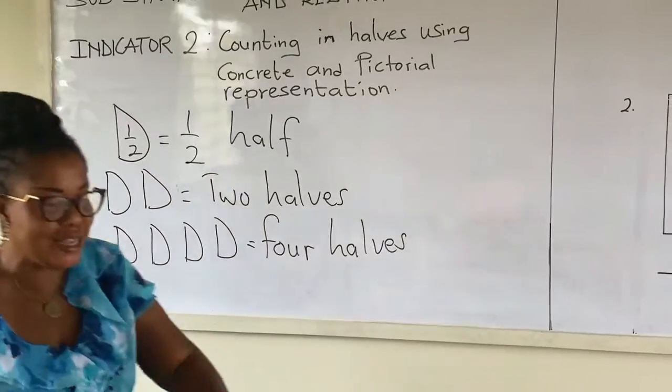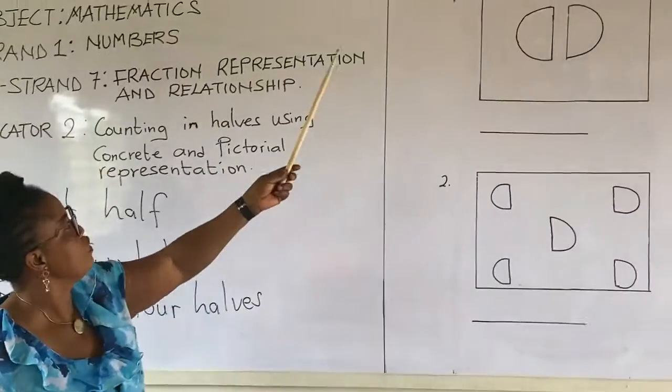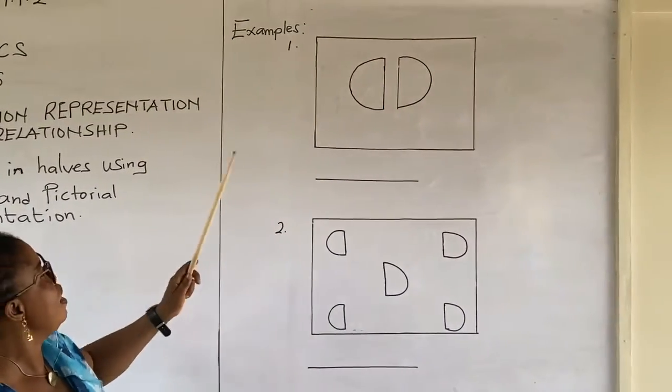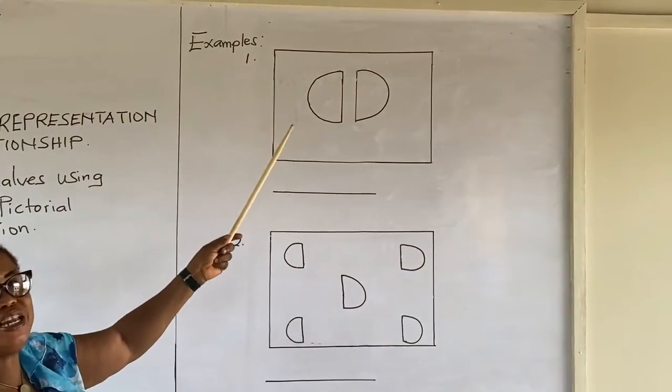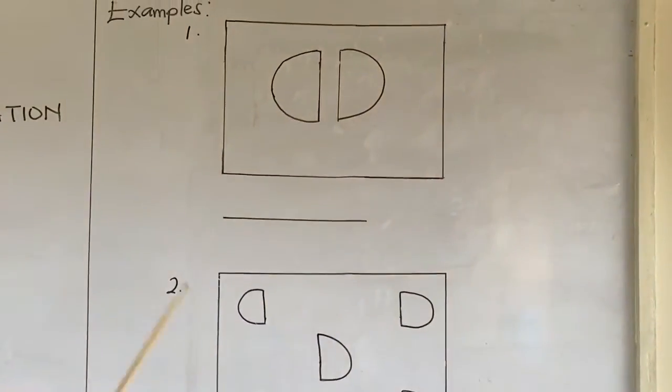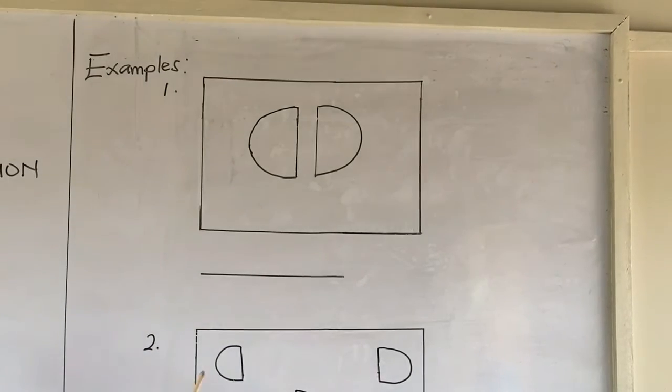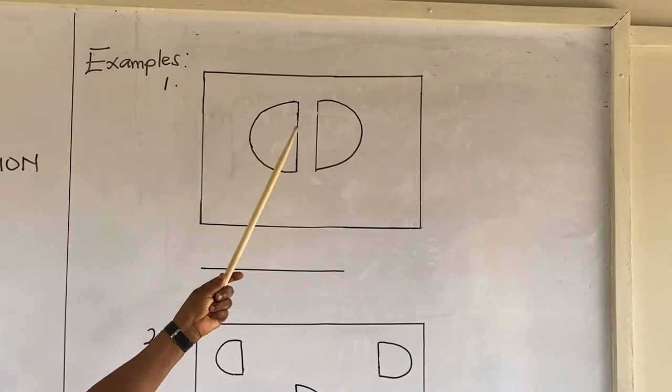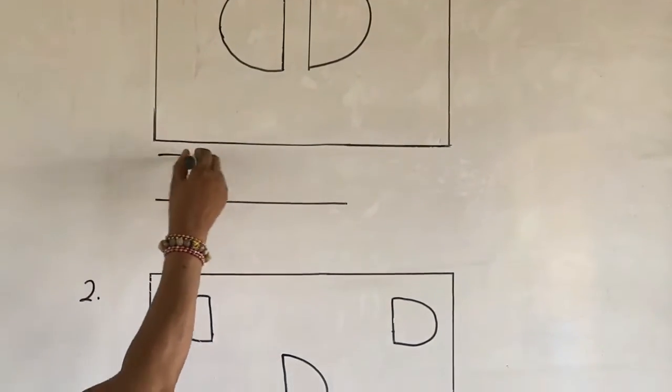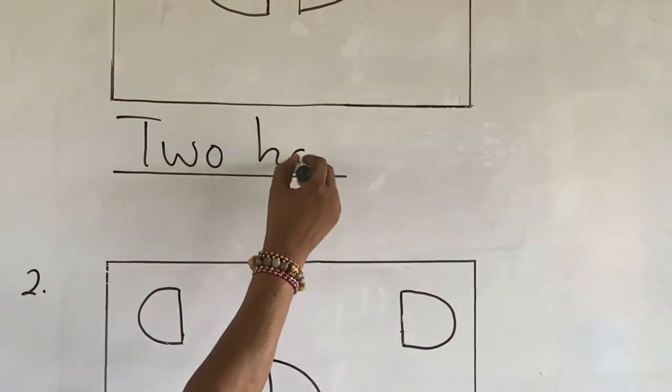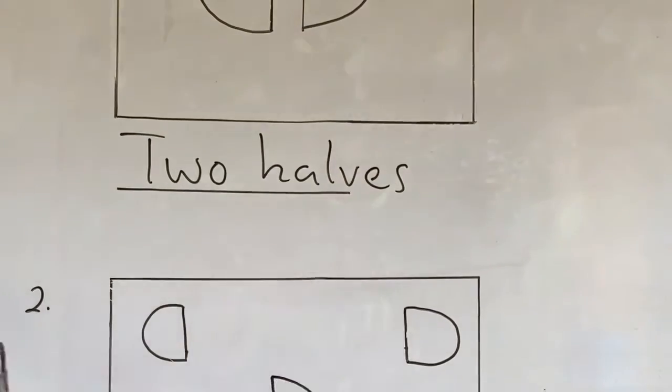Alright. Now, let's look at the examples here. Example one: we have halves in one group. We are going to count the number of halves here. Let's count it together. We have one, two. And we are going to write two halves under it.